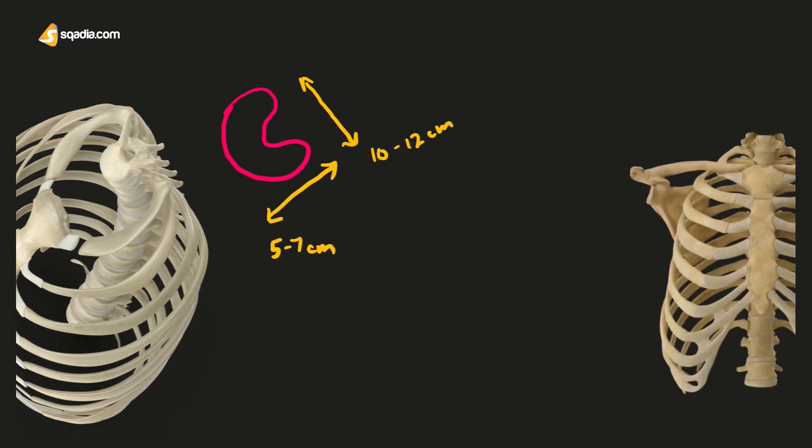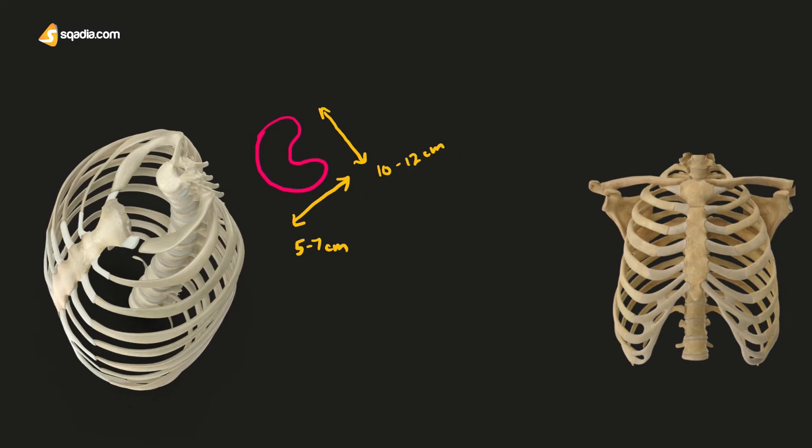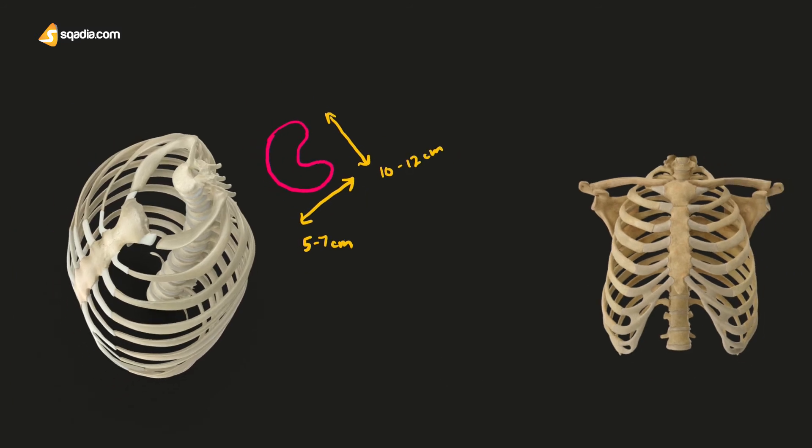Here we can see the ribcage as well. If you look closely, we can see that anteriorly we have the acromioclavicular joint on the left and right side. You can't really see the clavicle on this one, but you can see it over here. And we also have the manubrium sterni, so the upper border of the manubrium sterni right here.